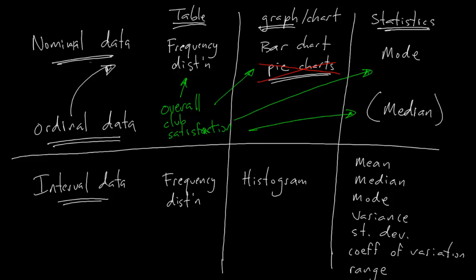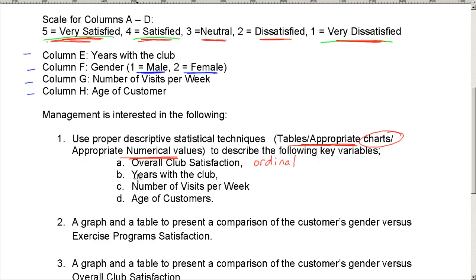Now what about the next one? My next one is years with the club. Now you either measure or you count years, so that's interval data. Part C, the number of visits per week. That's something you count, you count how many times you visit per week. So, that's interval data. Age of customers. You count your age.